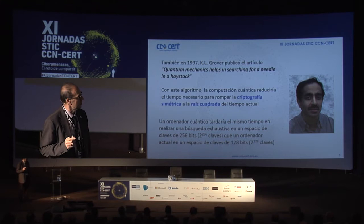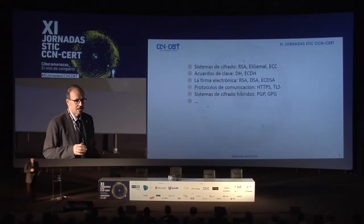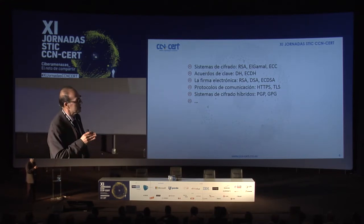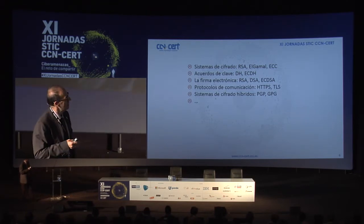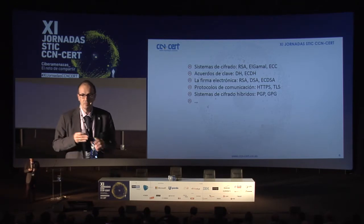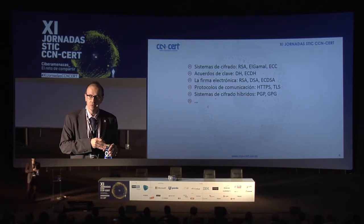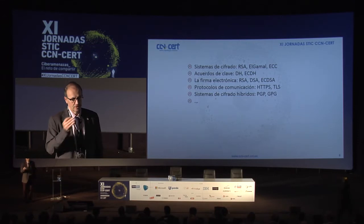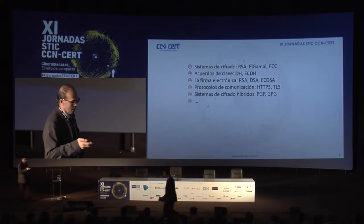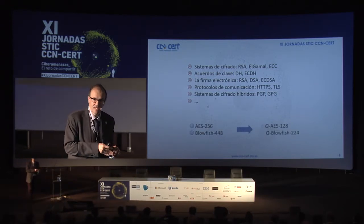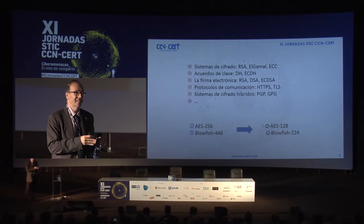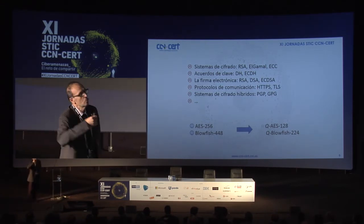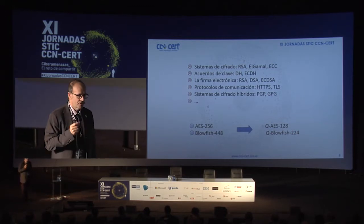Entre estas dos circunstancias, uno se plantea la siguiente situación: si tuviéramos un algoritmo cuántico, todo lo que tiene que ver con RSA, El Gamal, curvas elípticas y Diffie-Hellman estaría vulnerado. Cualquier protocolo que dependiera de la factorización de números o del logaritmo discreto quedaría comprometido. Por el contrario, la criptografía simétrica no estaría muerta, pero pasaríamos de un AES de 256 bits a un AES cuántico con seguridad de solo 128 bits.